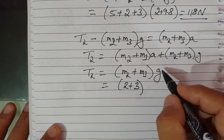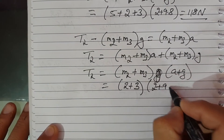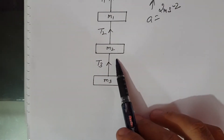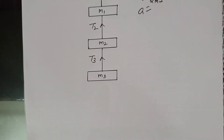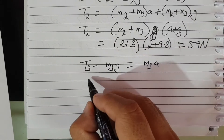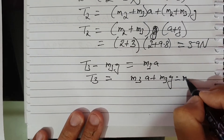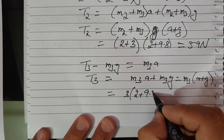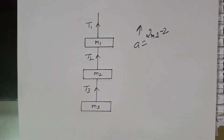For tension T3, considering only M3: T3 − M3G = M3A. Therefore T3 = M3(A + G) = 3 × (2 + 9.8) = 3 × 11.8 = 35.4 N.